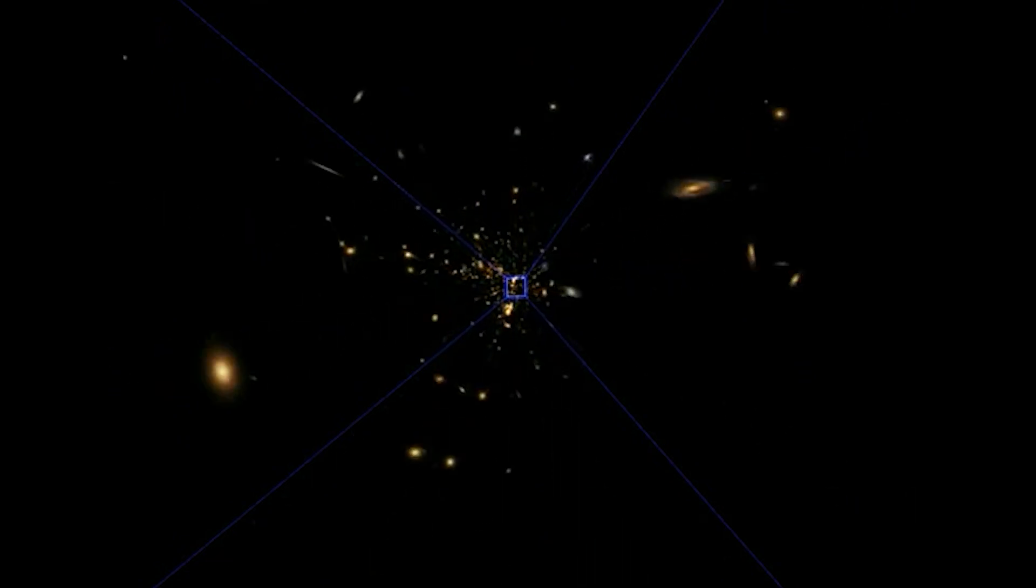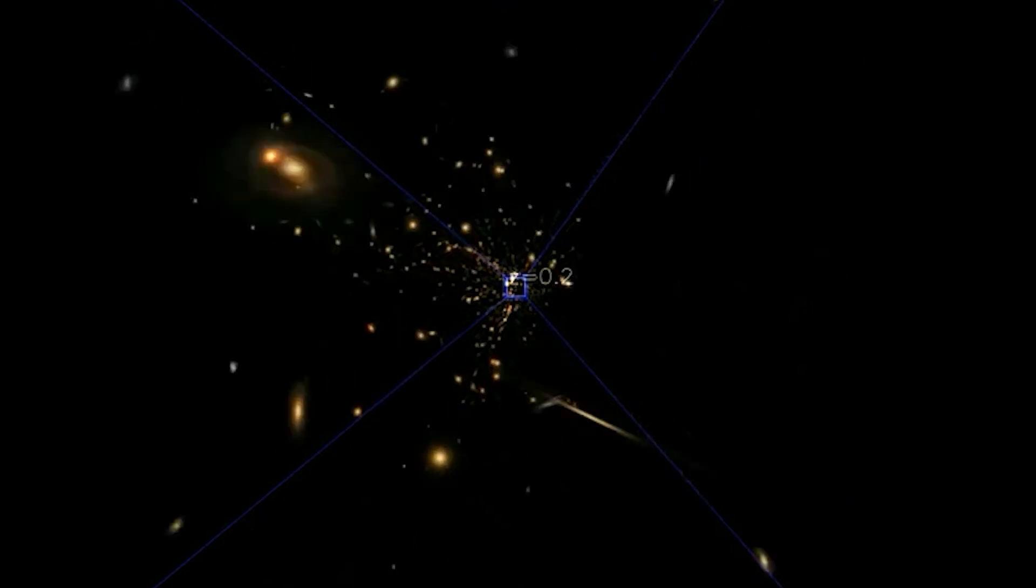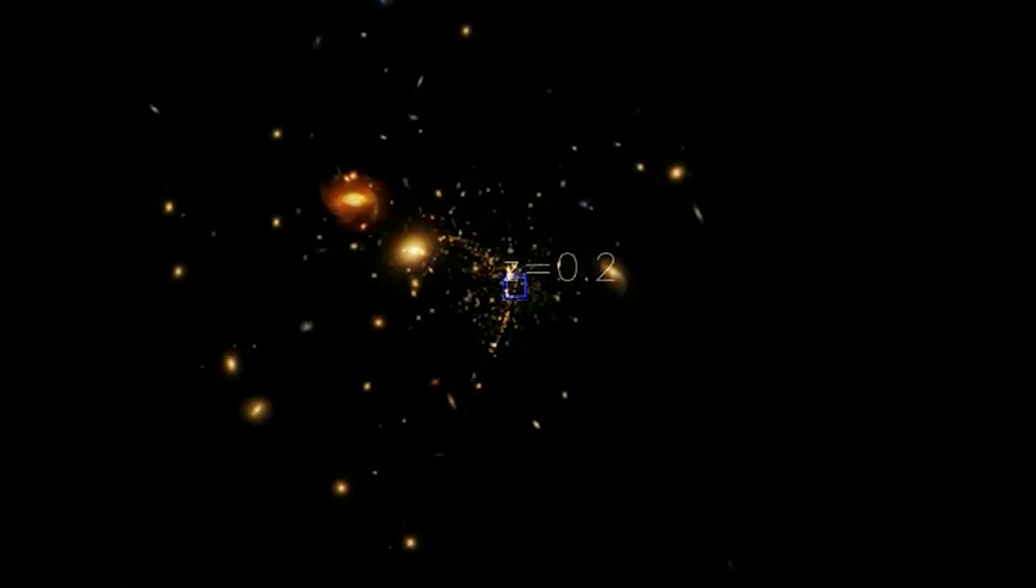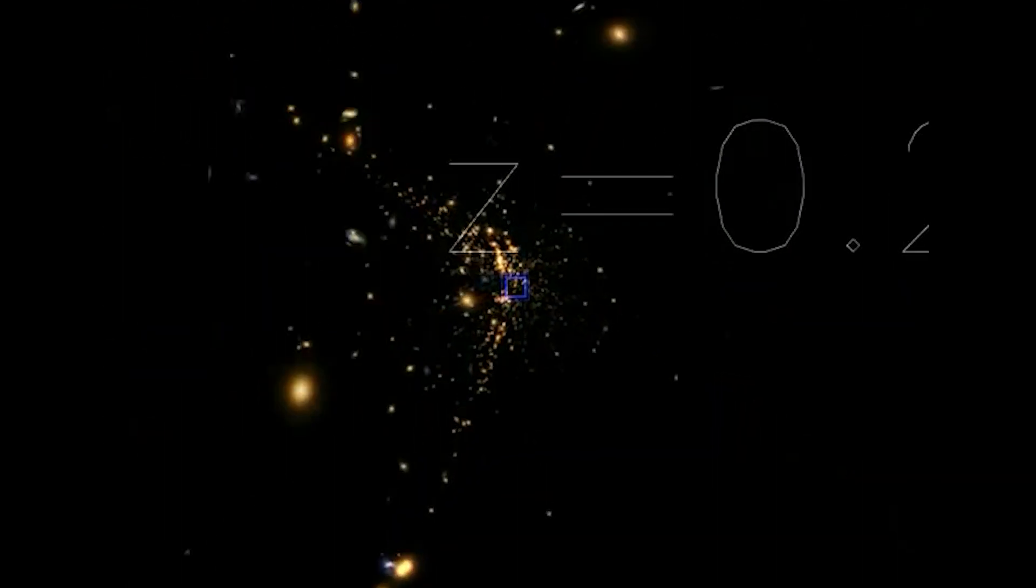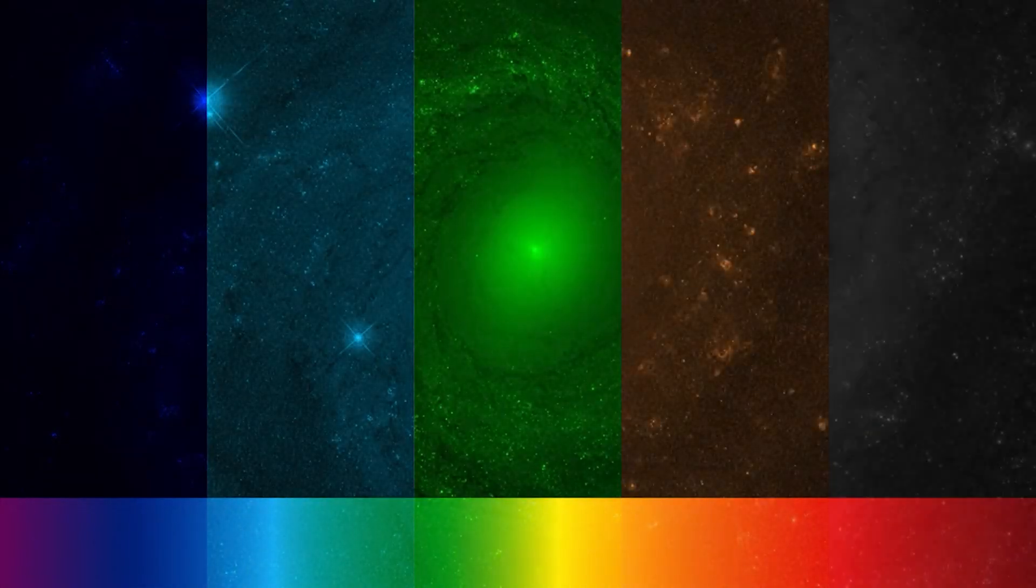COSMOS brings together data from world-class telescopes, such as the Atacama Large Millimeter Submillimeter Array, ALMA, and the Subaru Telescope. COSMOS contains data from radio waves, infrared light, visible light, and X-rays.